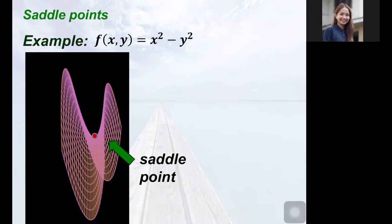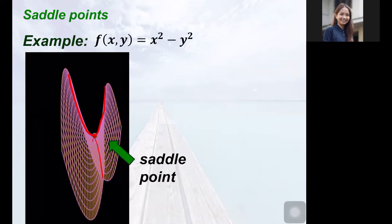To illustrate a saddle point, let us consider the hyperbolic paraboloid defined by f(x,y) = x² − y². A saddle point is like the 3D counterpart of the point of inflection. It is also called a minimax point because it occurs when a relative minimum exists in one direction and a relative maximum exists in the other direction.